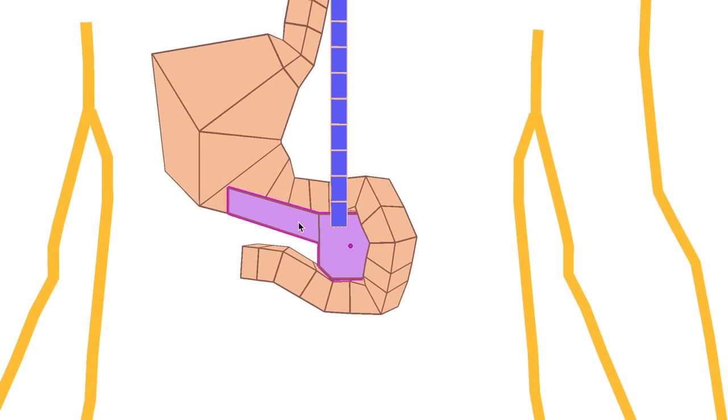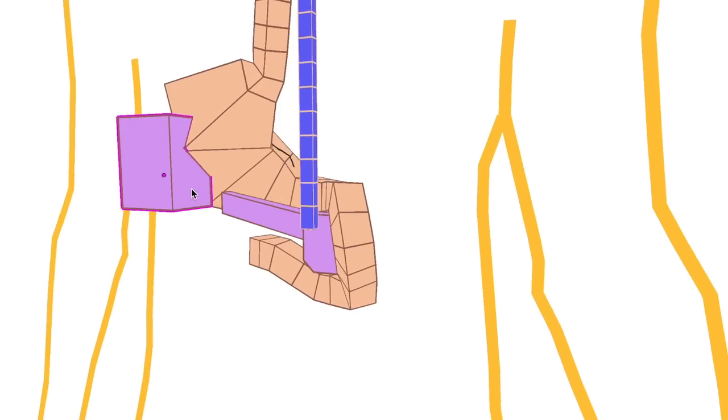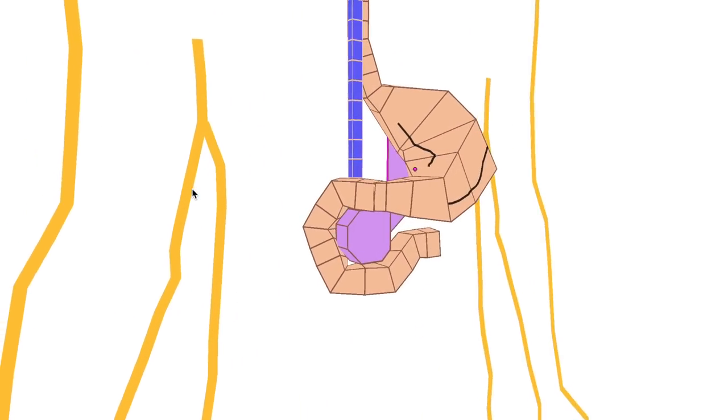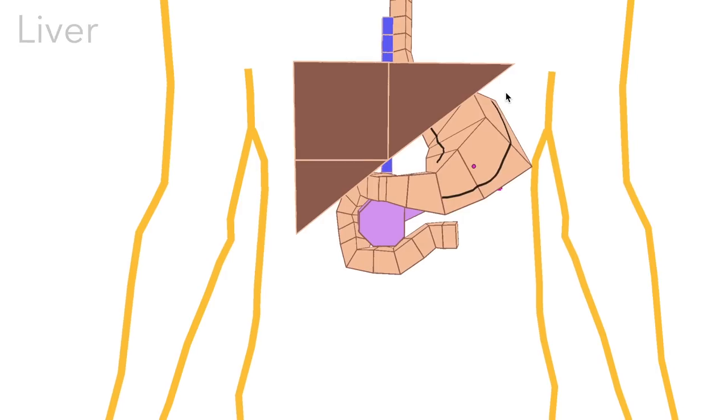The pancreas' tail heads laterally towards the spleen. The stomach is tucked quite neatly under the liver, which looks like a simple triangle from this angle.